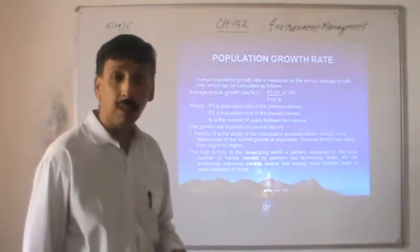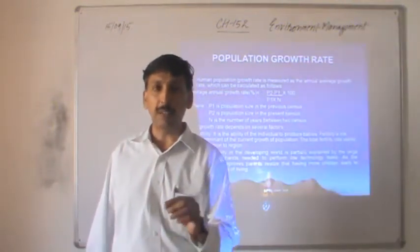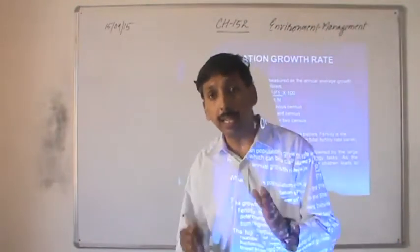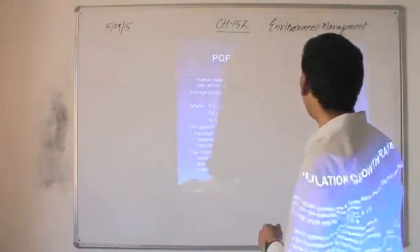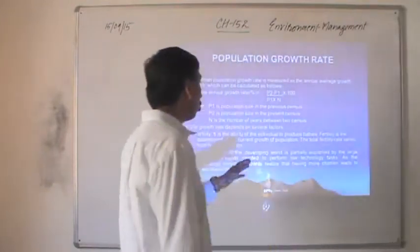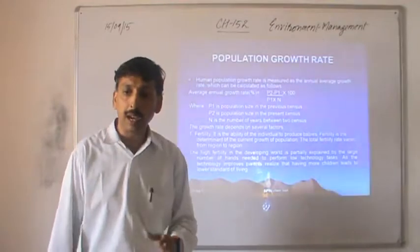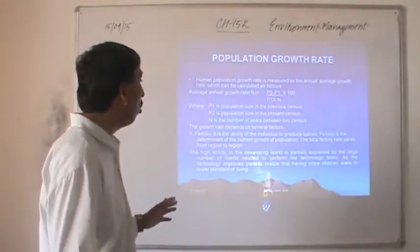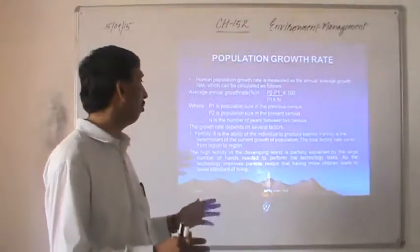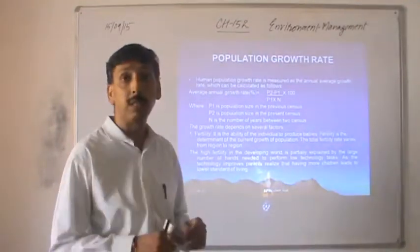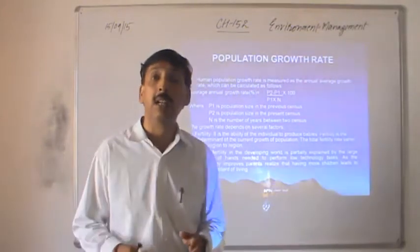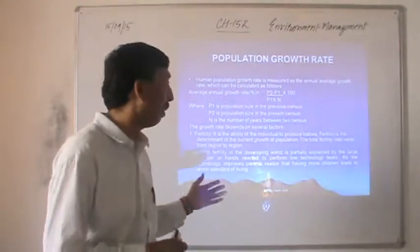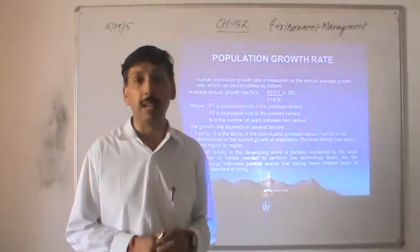The growth rate depends on several factors. The first factor is fertility — the ability of the individual to produce babies. Fertility is the determinant of the current growth of population. The total fertility rate varies from region to region. High fertility in the developing world is partially explained by the large number of hands needed to perform low-technology tasks. As technology improves, parents realize that having more children leads to a lower standard of living, though many Asian countries historically believed more working hands meant higher living standards.